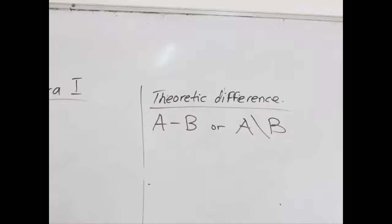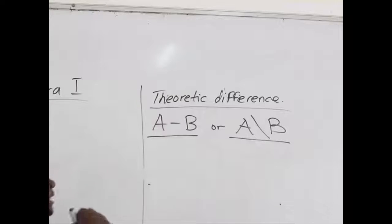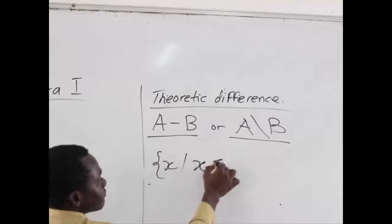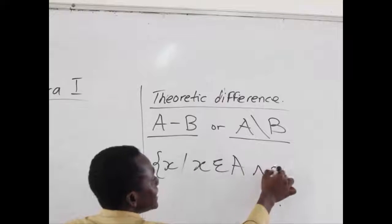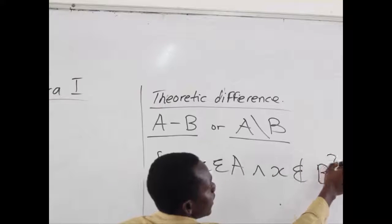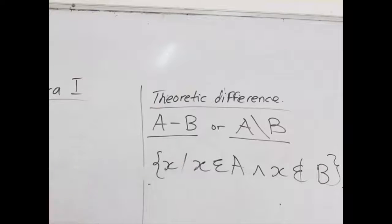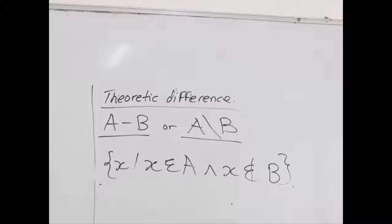Note that this means when we say Theoretic Difference, assuming we have a member or an element in these two sets, let's say X, what it simply means is that that element can be found in A and at the same time, that element cannot be found in set B. Or in other words, when you have sets A and B, the Theoretic Difference is all the elements that can be found in A but cannot be found in set B.